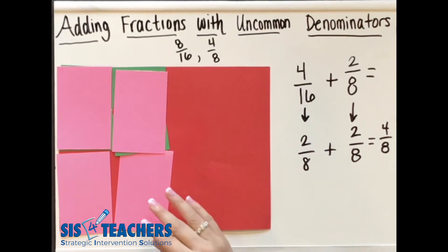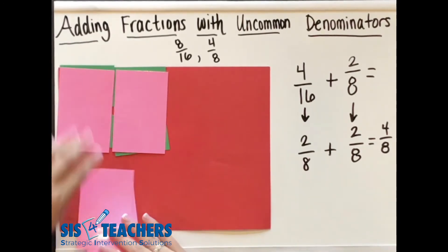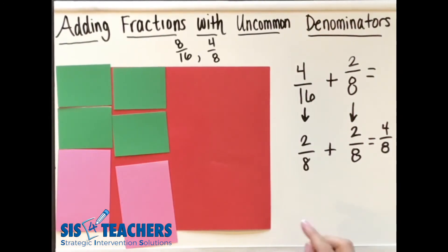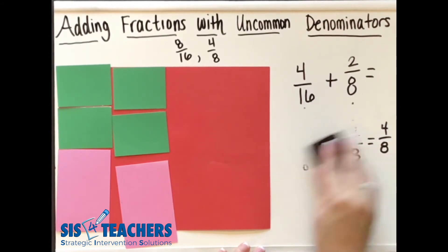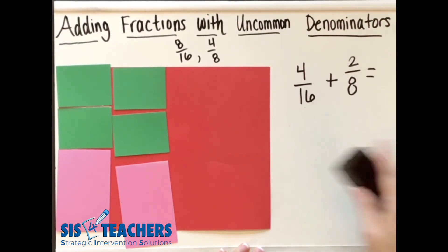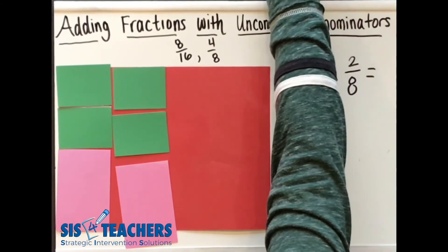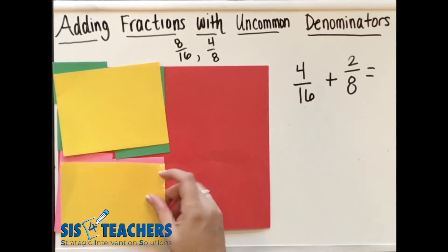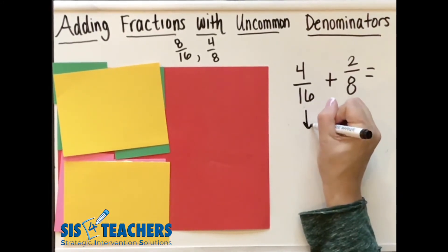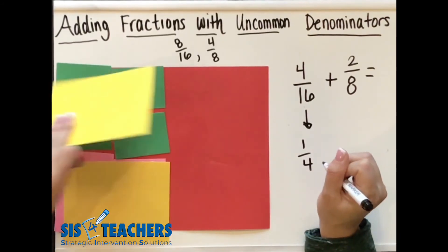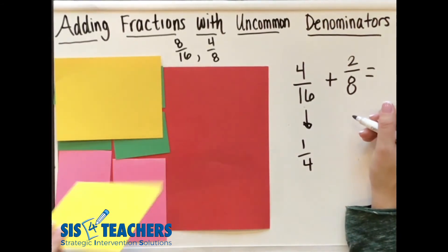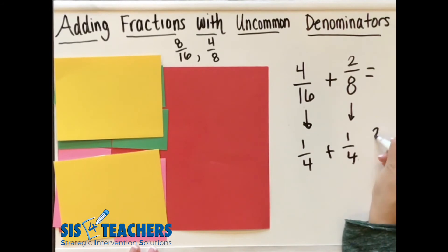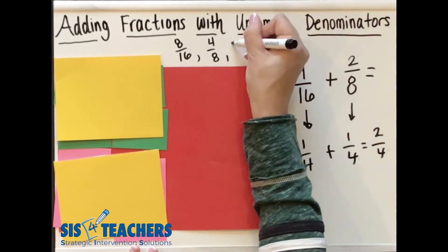Did students in your classroom come up with another way to solve it? Some students may have said, our group solved it a different way. They may explain that they ended up taking the four sixteenths and covering it and making it into a fourth and a fourth. Does four sixteenths equal one-fourth? Yes, we just proved it right here. Does two eighths equal one-fourth? Yes, we just proved it right here. So now we're essentially adding one-fourth plus one-fourth, which is going to give us two-fourths.